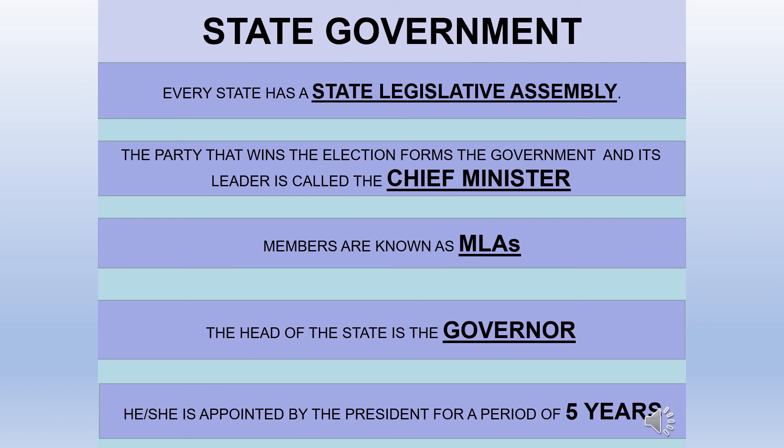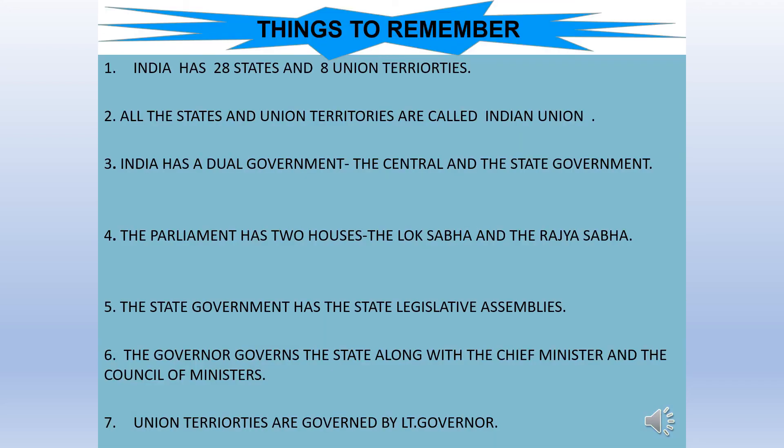State Government. Every state has a State Legislative Assembly. The party that wins the election forms the government and its leader is called the Chief Minister. Members are known as MLAs — Members of the Legislative Assembly. The head of the state is the Governor, who is appointed by the President for a period of 5 years.